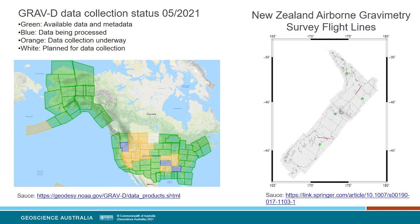Airborne gravimetry data over New Zealand were used to completely regularize the data coverage across the whole country, filling in holes in the terrestrial data coverage over areas of rough topography, particularly through the central South Island. With these data, we were ultimately able to compute a geoid model accurate to around 2 to 3 centimetres. In the United States, they are completing the collection of a nationwide set of airborne gravity data with the similar intention of producing a more accurate geoid model as part of their Gravity for the Redefinition of the American Vertical Datum project.